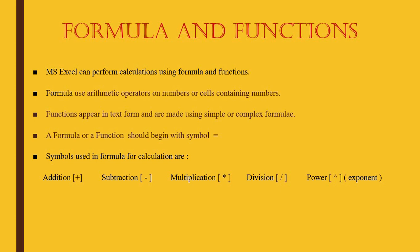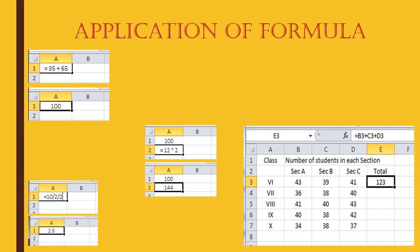Application of formula: if you write =35+65, you will not see 35+65 on the cell — you will see 100. For exponentiation, =12^2 gives the result. A more complex example: =10/2/2 gives 2.5. You can also write formulas referencing cell addresses, and if you change the value in any of those cells, the result will automatically change. You will test this out in the practical action time.